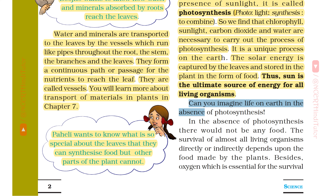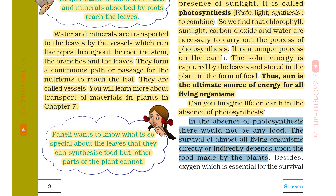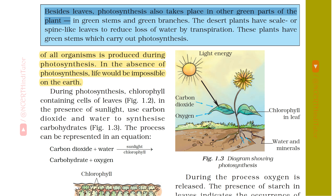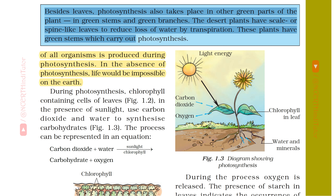Can you imagine life on earth in the absence of photosynthesis? In the absence of photosynthesis, there would not be any food. The survival of almost all living organisms directly or indirectly depends upon the food made by the plants. Besides, oxygen, which is essential for the survival of all organisms, is produced during photosynthesis. In the absence of photosynthesis, life would be impossible on the earth. Photosynthesis also takes place in other green parts of the plant — in green stems and green branches. Desert plants have scale or spine-like leaves to reduce loss of water by transpiration. These plants have green stems which carry out photosynthesis.